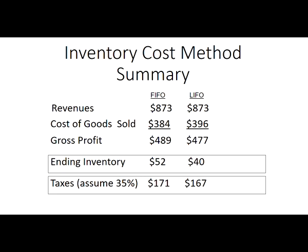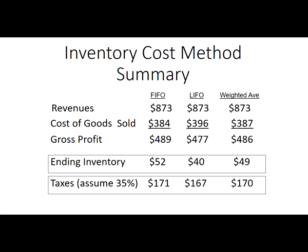In periods of rising prices: FIFO presents higher gross profit, higher inventory, and higher taxes. Weighted average falls in between for cost of goods sold, gross profit, ending inventory, and taxes. Weighted average always lands between FIFO and LIFO — whether prices are rising or falling.